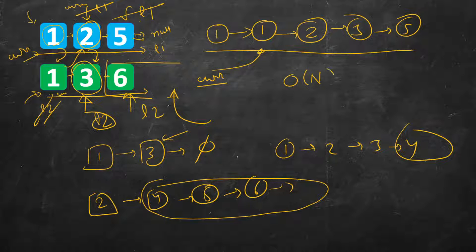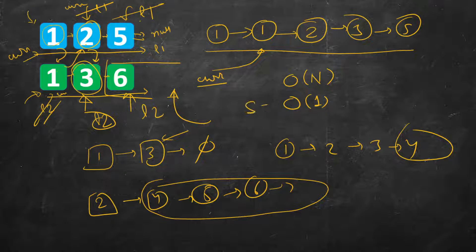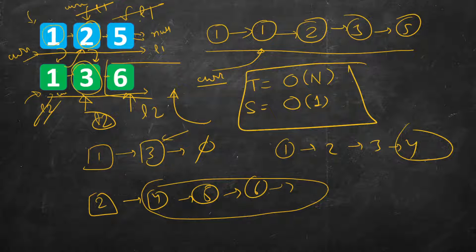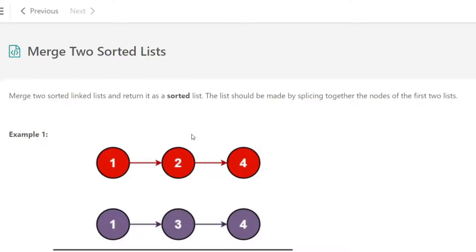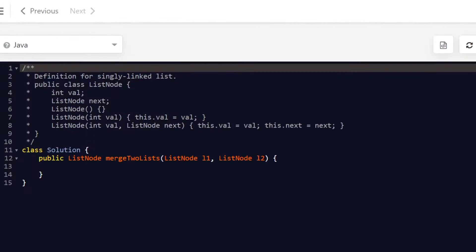Space complexity is O(1) — we are not using anything other than a few pointer variables. If you are not allowed to modify the lists then you can create a new list and copy the nodes into that result. Let's write the code for this quickly, starting with C++.